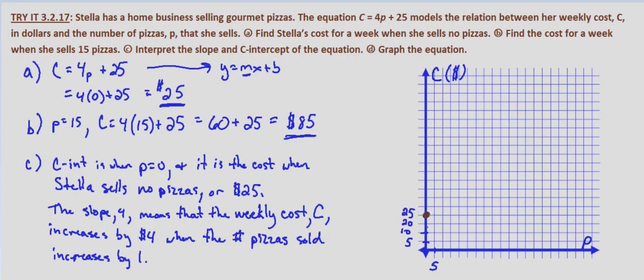We already have another point — that's when P equals 15. When the number of pizzas sold is 15 we know that her cost is $85. So we go over to 15 and then up to 85.